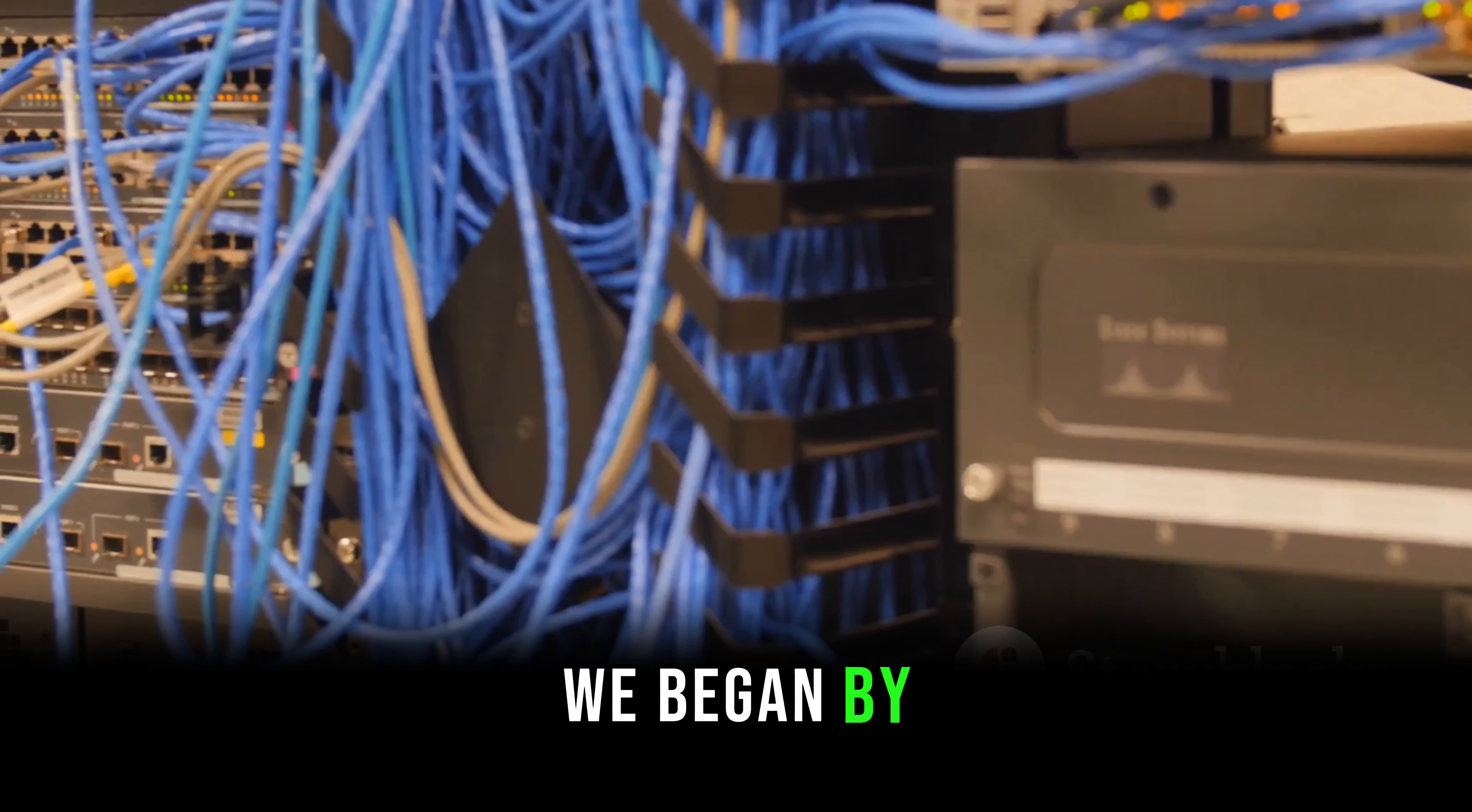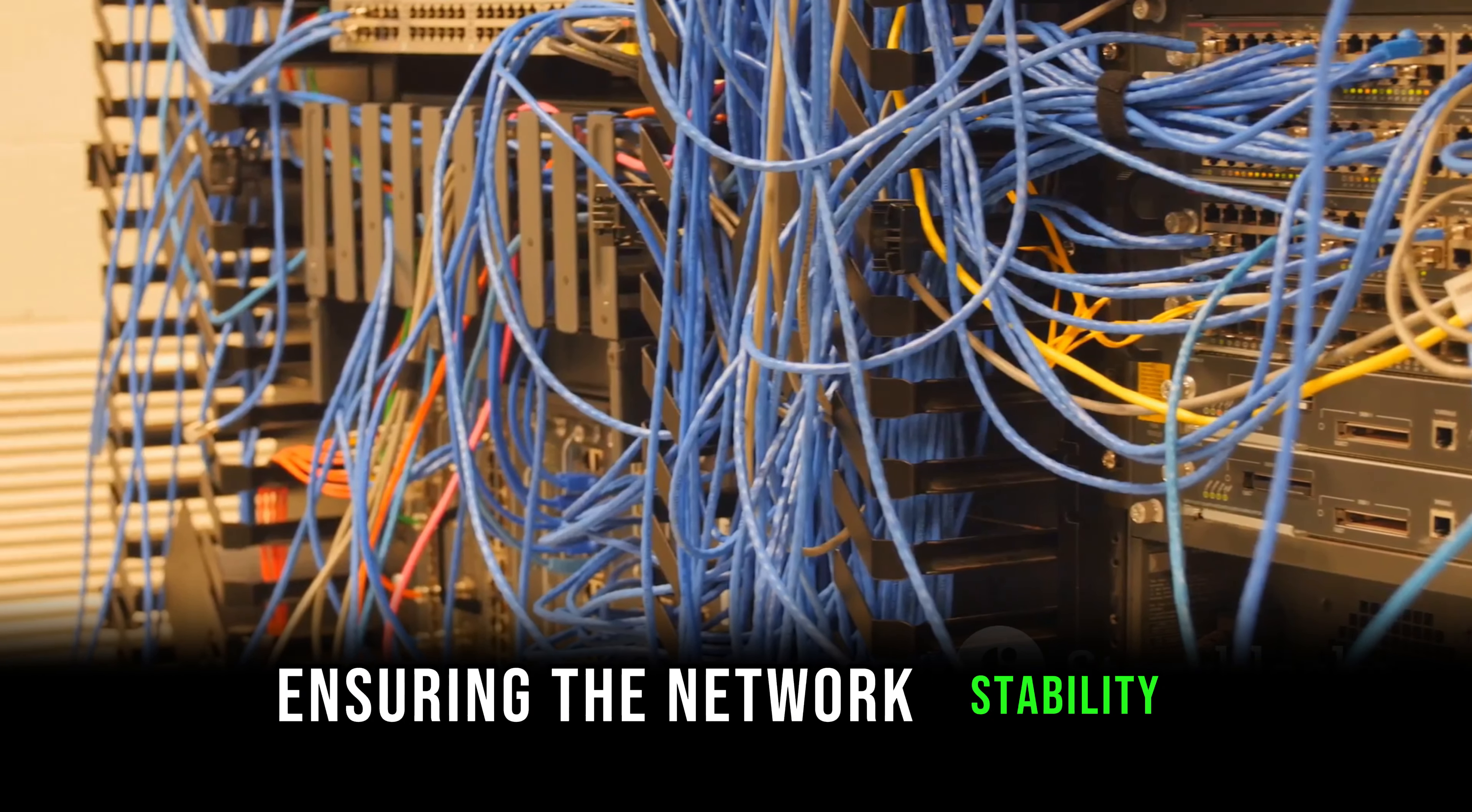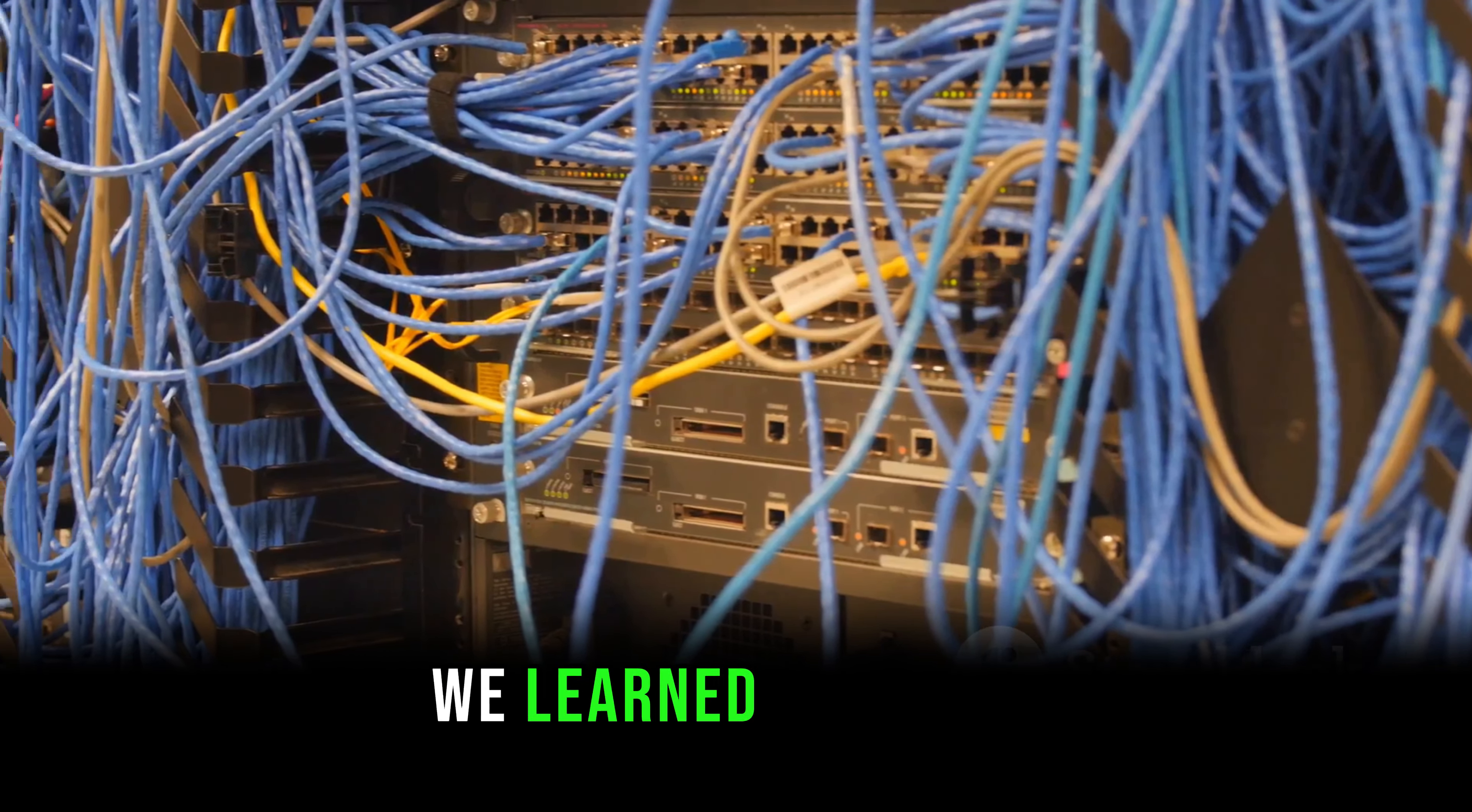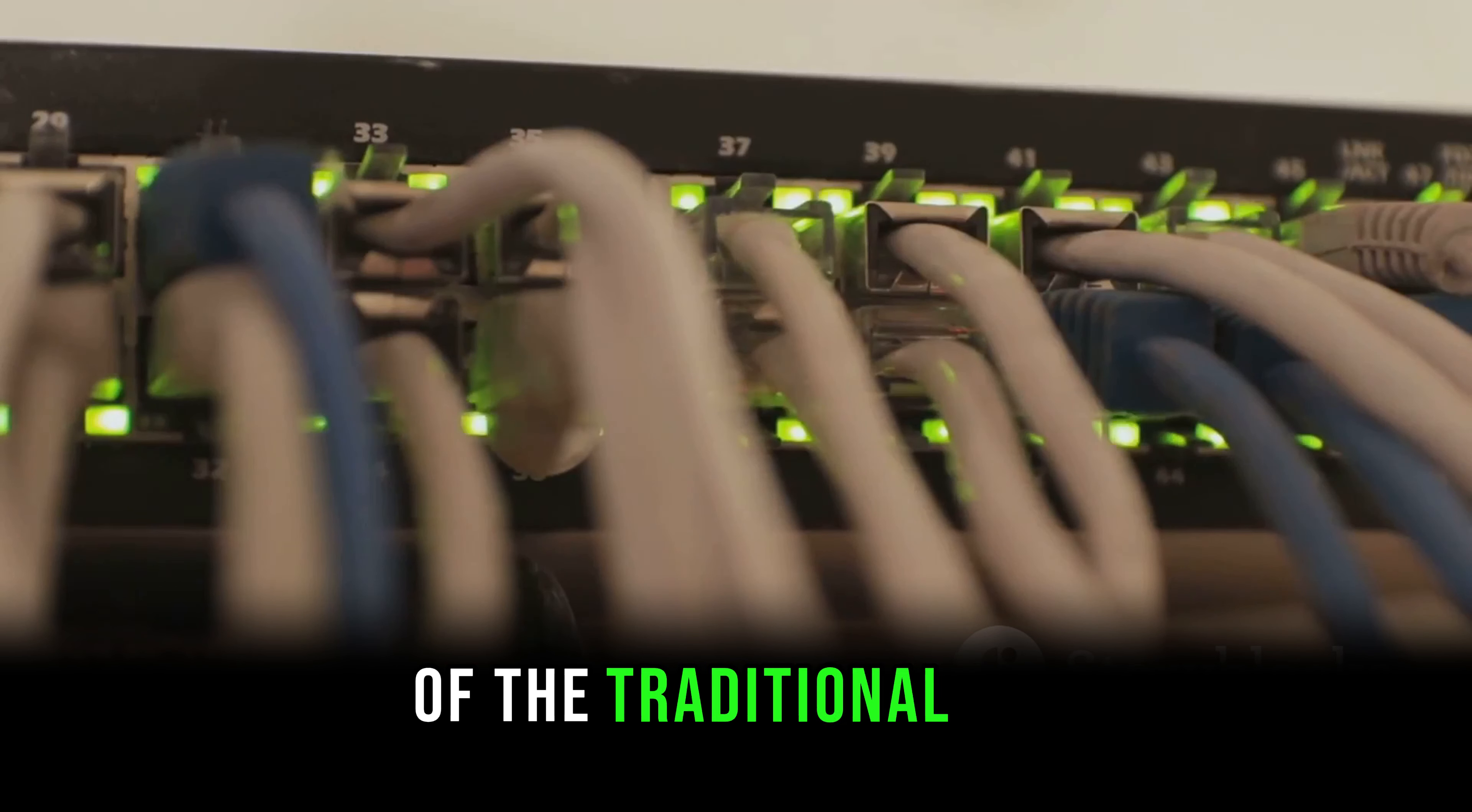We began by establishing the importance of STP variants. We learned that these variants are crucial to prevent loops in the network, ensuring the network's stability and efficiency. We then ventured into MSTP, the Multiple Spanning Tree Protocol. We learned about its unique ability to map multiple VLANs into a single spanning tree, providing a solution to the limitations of the traditional STP.